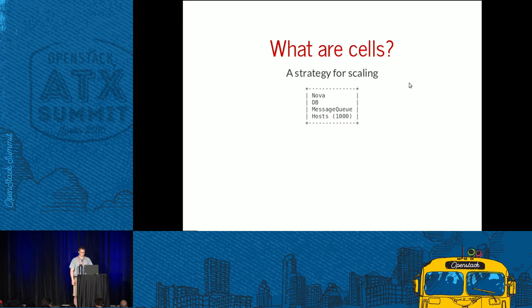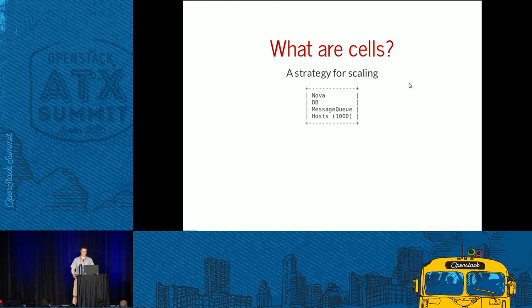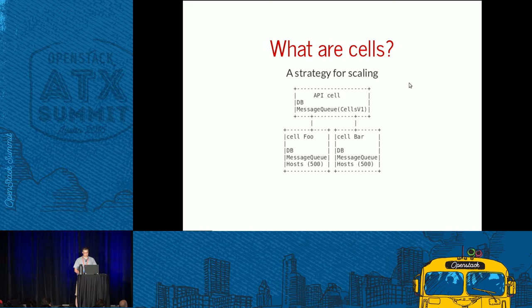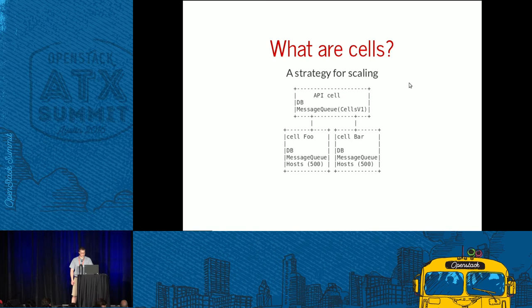Cells are a strategy for scaling. There are two things we may want to scale: the database and the message queue. If you think about Nova today without cells, you might have a single deployment with a thousand hosts, which may overwhelm the message queue or the database. With cells, you add a little complexity — an API cell at the top — and you can split hosts across cells, each dealing with only 500 hosts, reducing the load on each.